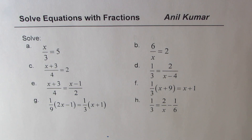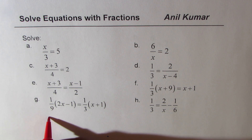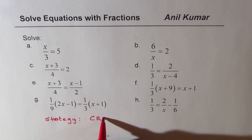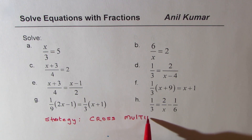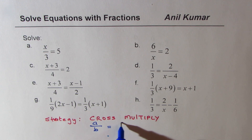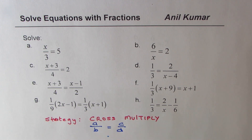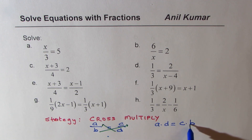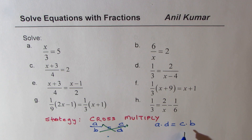I'm Anil Kumar, welcome to my series on solving equations which involve fractions. We have eight examples to practice. The strategy I'm going to use here is very simple — we call it cross multiply. If we have A over B equals C over D, we cross multiply: A times D equals C times B. In this resulting equation there are no fractions, so we avoid fractions by cross multiplication.